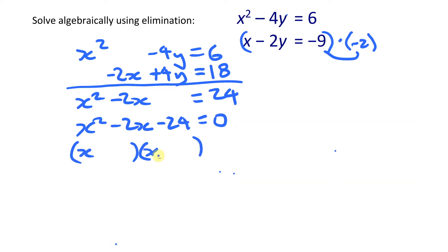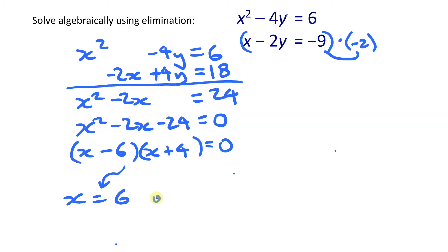Factoring gives (x − 6)(x + 4) = 0. From that factored form I can determine my two x values: x = 6 or x = −4. From those I can find the corresponding y values.